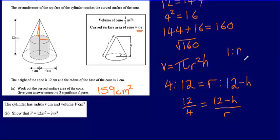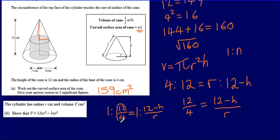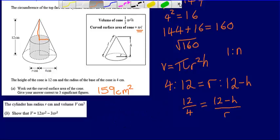Just to reiterate: I've put both ratios in the form 1 to n. Dividing through by 4 gives 1 to 12 over 4, which equals 1 to 12 minus h divided by r. Once I've got both ratios in the form 1 to something, I can equate the second part of each ratio. So 12 over 4 equals 12 minus h over r.